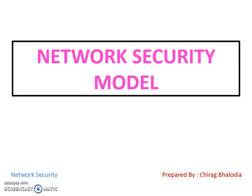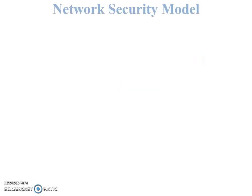Hello friends, myself Chirak. Today I'm going to discuss with you the network security model. The definition of network security is to pass the data from sender to receiver through a logical or secure communication channel, also called a secure internet connection.